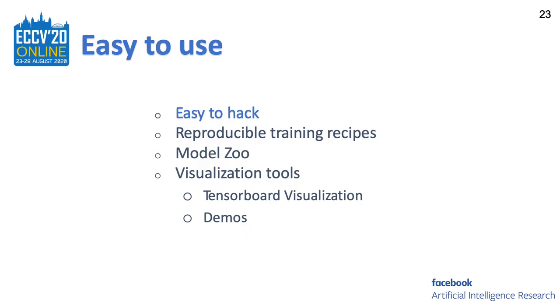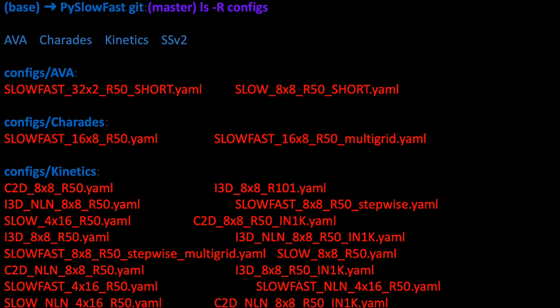PySlowFast is designed to be very easy to hack, which means you are encouraged to directly modify the code on top of it. The codebase is designed to support rapid implementation and evaluation of your new, novel, brave ideas very quickly. To facilitate your research and speed up the research cycle, PySlowFast provides a comprehensive list of training recipes on different datasets with different types of methods. If you clone the codebase and list the YAML config files under the config folder, you will see many different YAML files with different dataset folders, like AVA, Charades, Kinetics, Something-Something, and others.